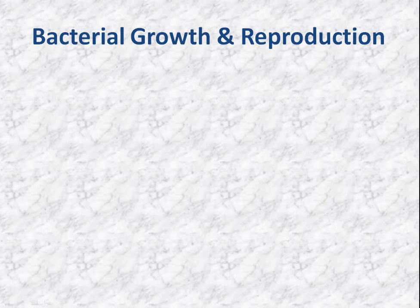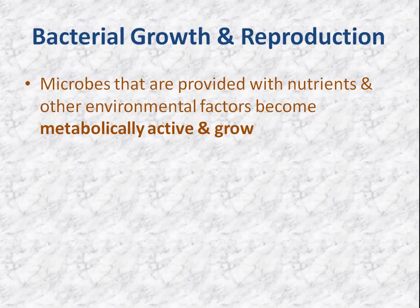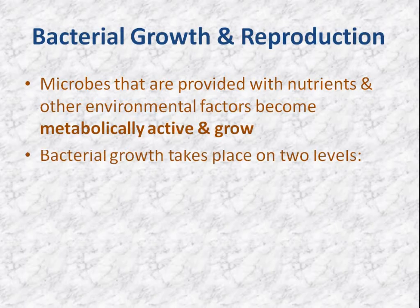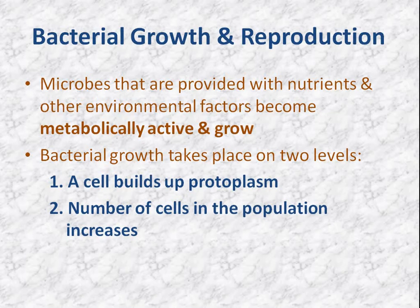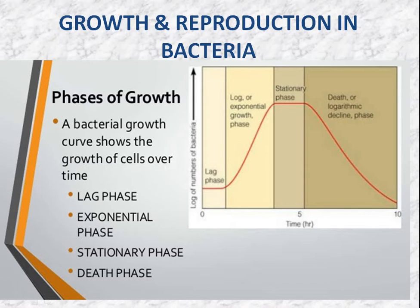Now bacterial growth and reproduction. Microorganisms, when provided with nutrients and other environmental factors, become metabolically active and grow. Bacterial growth takes place on two levels: a cell builds up protoplasm, and the number of cells in the population increases. Bacterial growth occurs in four major phases, which can be represented by a bacterial growth curve: lag phase, exponential or log phase, stationary phase, and death phase.